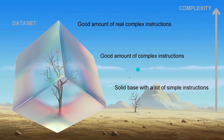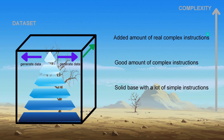Now imagine instead of a pyramid, we have a cube. A cube has no tip. We have a solid base with a lot of simple instructions, the same as in the pyramid. But in the middle, we have a good amount of complex instructions. And since we are at the cube shape, we have the same good amount of really complex instructions at the top. So if we increase the complexity of our instruction tuning, our dataset has to expand.